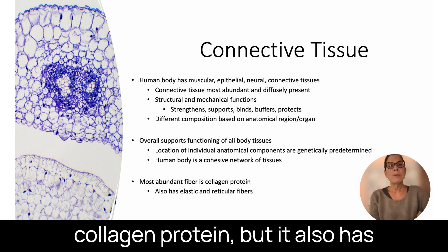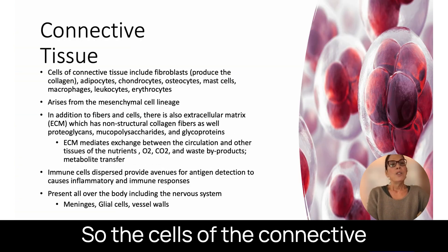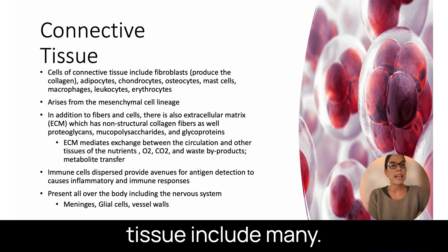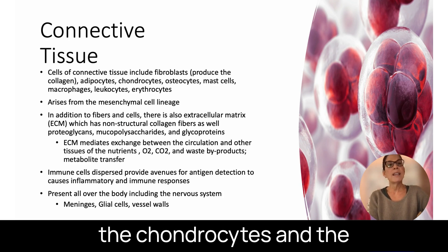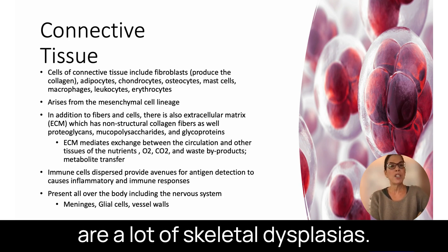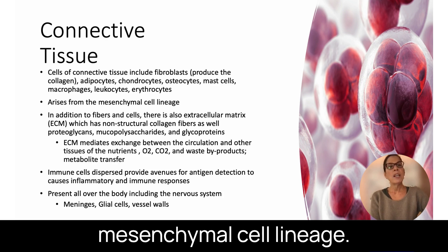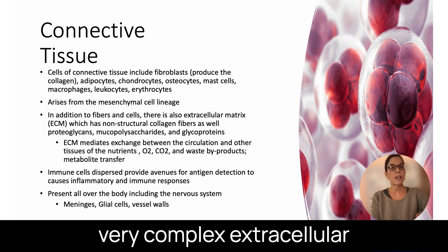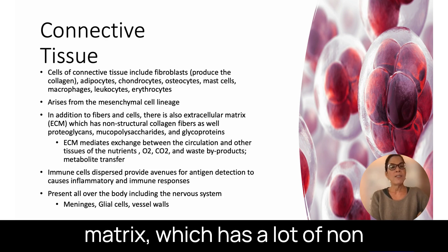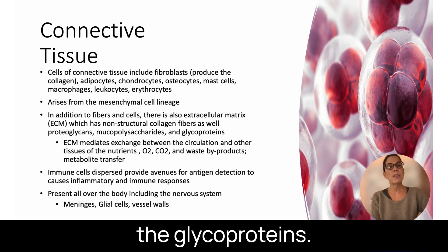The most abundant fiber is collagen protein, but connective tissue also has elastic and reticular fibers. The cells of connective tissue include fibroblasts, which produce the collagen, as well as adipocytes, chondrocytes, and osteocytes — which is why there are a lot of skeletal dysplasias. There are also mast cells, macrophages, leukocytes, and erythrocytes. They all arise from the mesenchymal cell lineage. In addition to fibers and cells, there is also the very complex extracellular matrix, which has non-structural collagen fibers, proteoglycans, mucopolysaccharides, and glycoproteins.